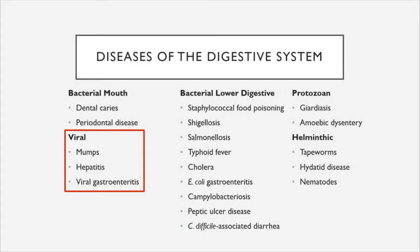That concludes our look at bacterial infections, and we're now moving on to viral infections, of which there are three: mumps, hepatitis, and viral gastroenteritis.